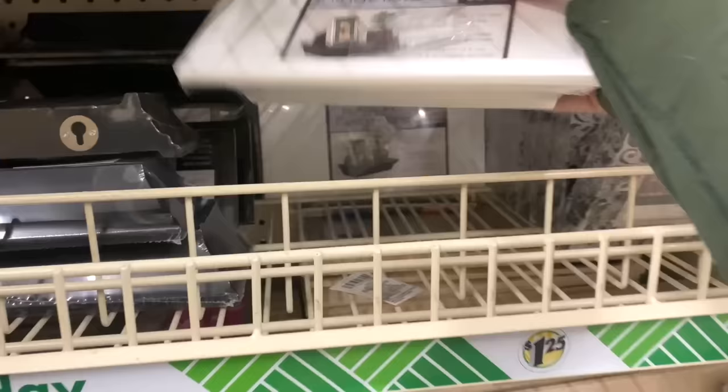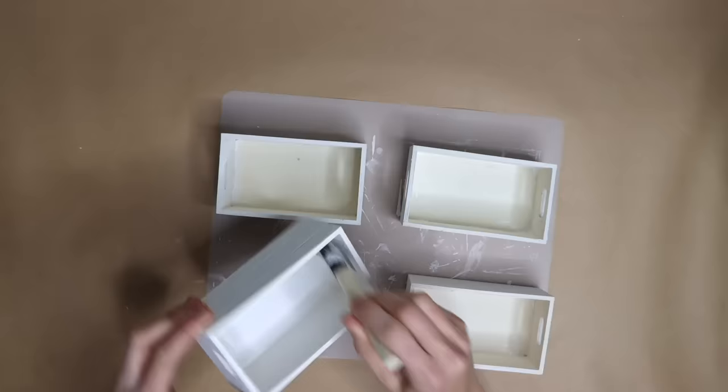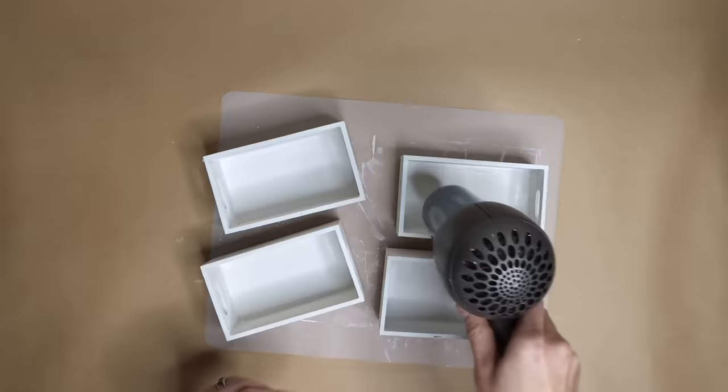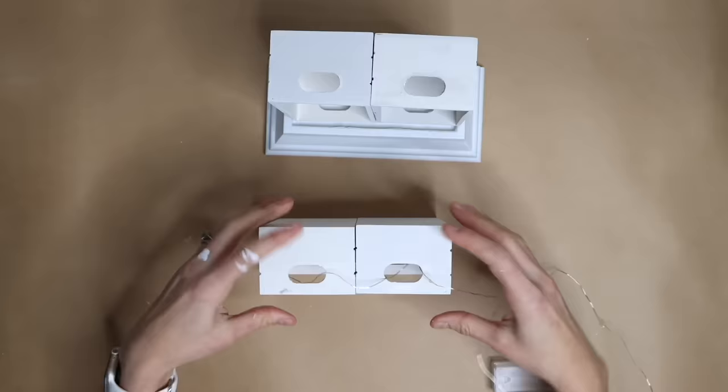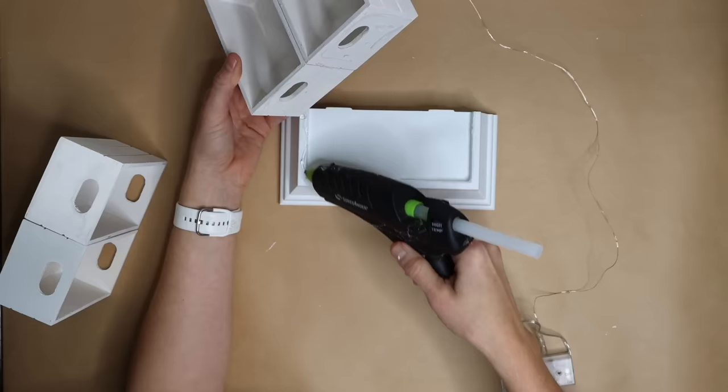Head to Dollar Tree and pick up four small wood crates, two small floating shelves. Take the white paint for all four crates. Assemble two crates together with hot glue and then attach to the second shelf upside down with more hot glue.